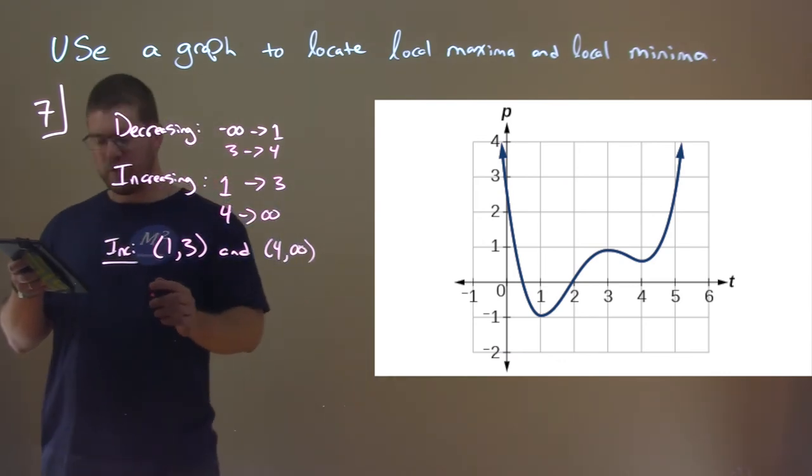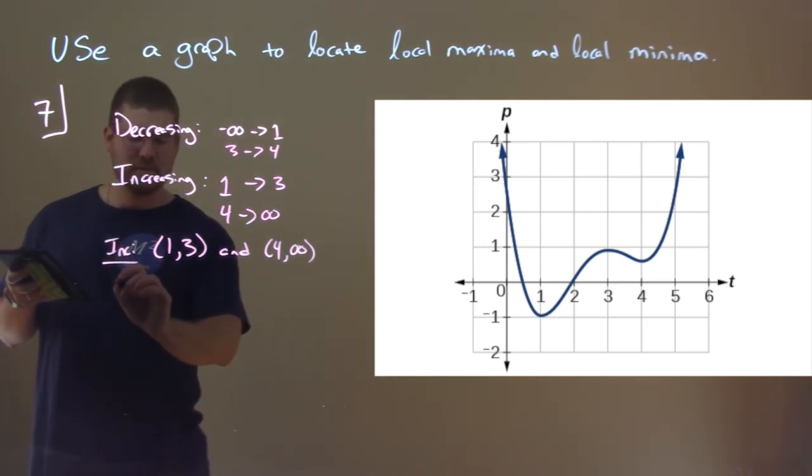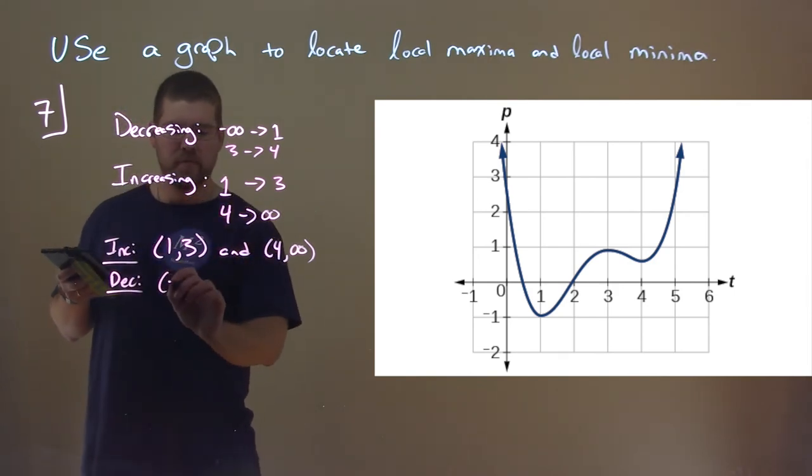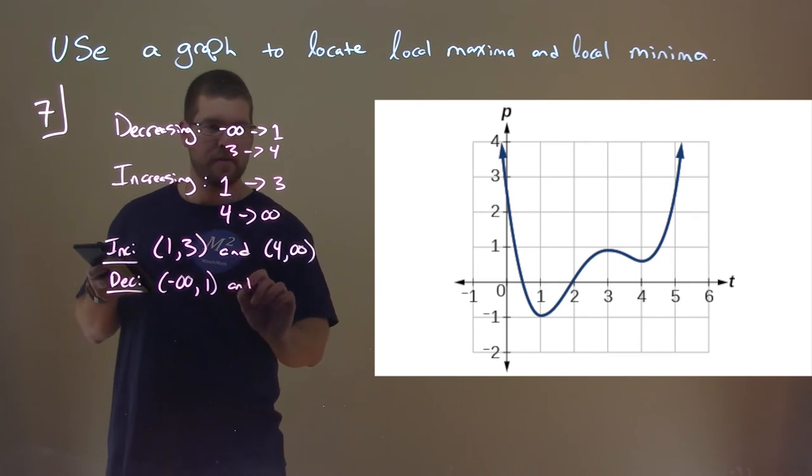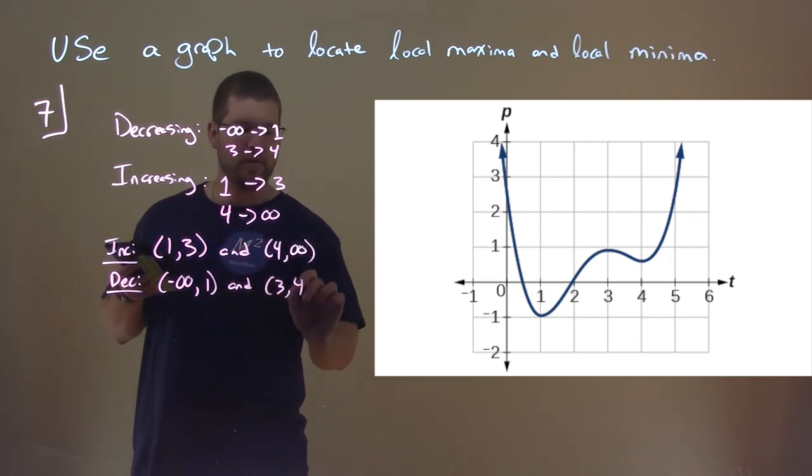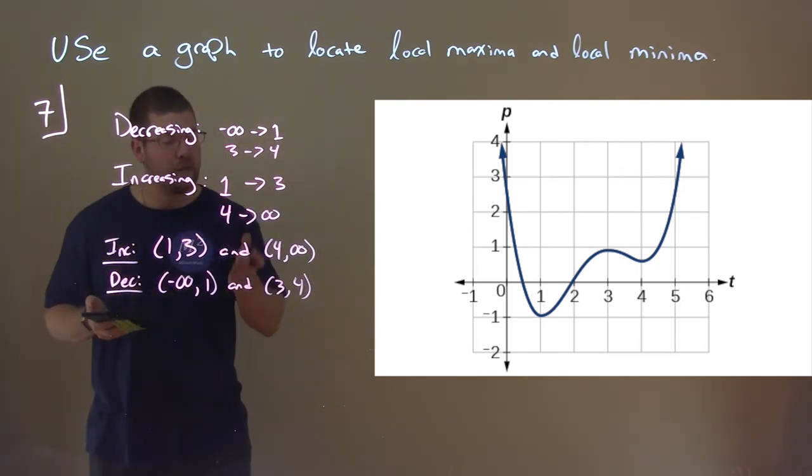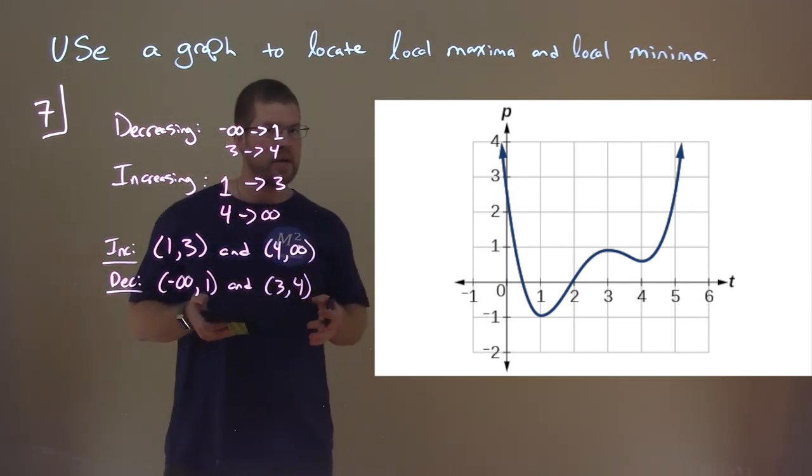And let's just go from, let's keep going for decreasing, why not? We can make an interval from negative infinity to positive one and from three to four. Notice I have parentheses here, parentheses here, and not brackets, because it's not increasing or decreasing at, let's say, four.